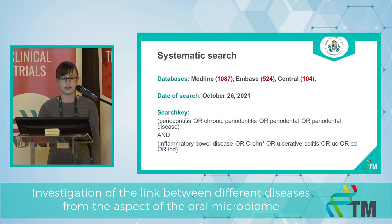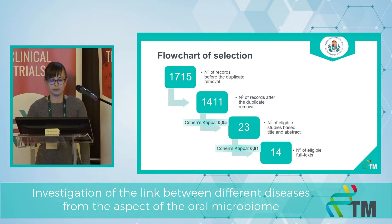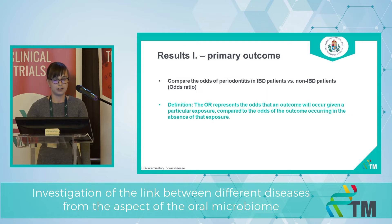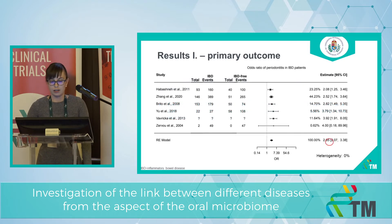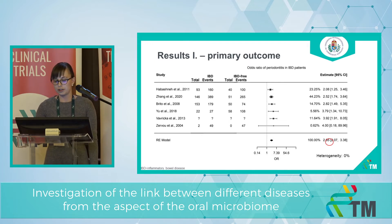A systematic search was made in October with the following search key. After the flow chart of selection, we found 14 eligible articles. As a primary outcome, we compared the odds of periodontitis in IBD patients versus non-IBD patients and obtained odds ratio values. The odds ratio value was 2.65.